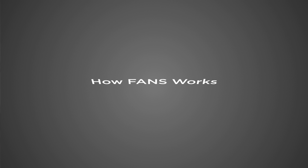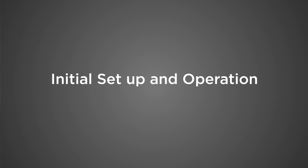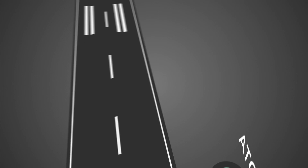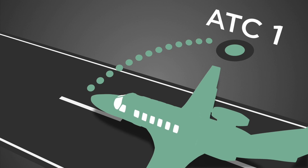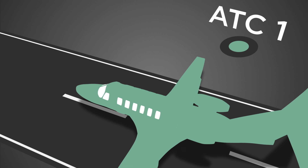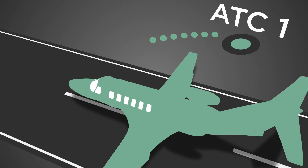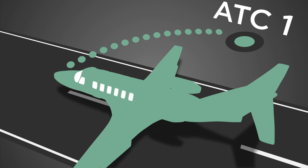In this next segment I'm going to talk about how FANS works. On pre-flight, when the crew gets in the aircraft, they're going to send a logon message to air traffic control. Air traffic control sends back an acknowledgement message. At that point, the aircraft is officially online with the FANS system.